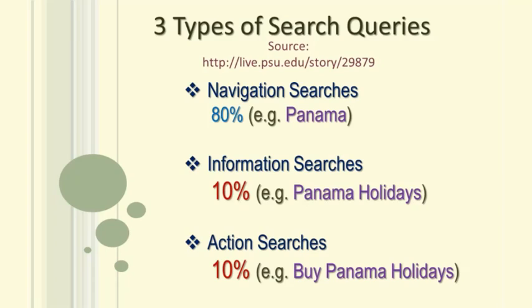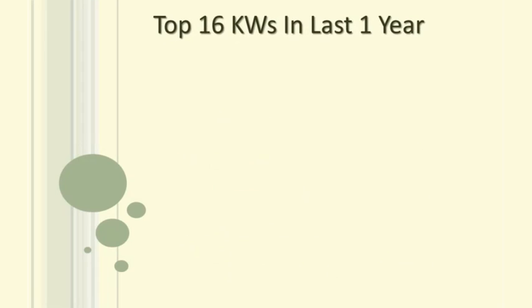Finally, when she types in 'Buy Panama holidays', her intention is absolutely clear. Some experts call this type of searches 'wallet out keywords.' This means the searcher is on the verge of making a transaction.